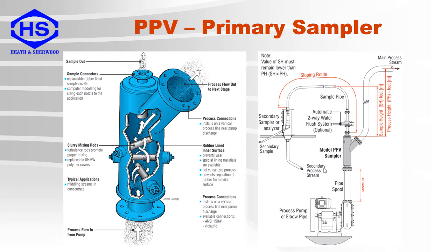This is an example of a pressure sampler with mixing bars which is called a PPV. These are used for slurry applications and are designed for vertical process lines which are under pressure. The mixing bars are optional and are used to mix the slurry for better sample representativity. The PPV has a nozzle placed in the middle of the slurry flow to extract a portion of the material. The extracted sample then goes through a sample exit nozzle, and the process flow exits the main body of the sampler at an angle.